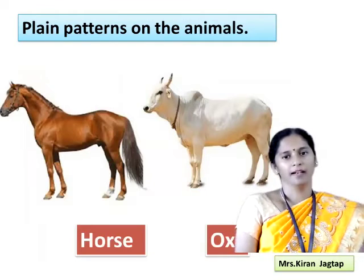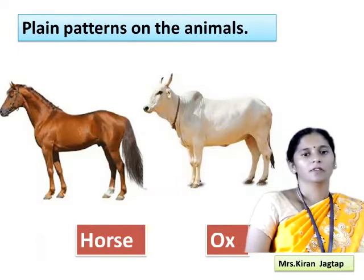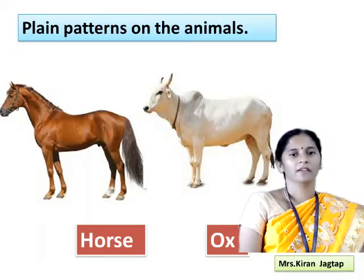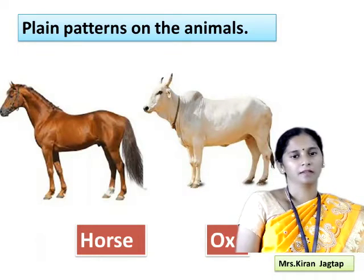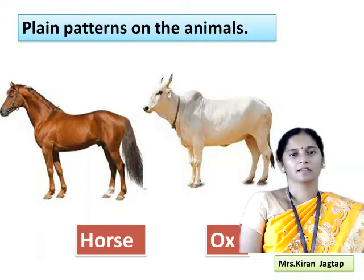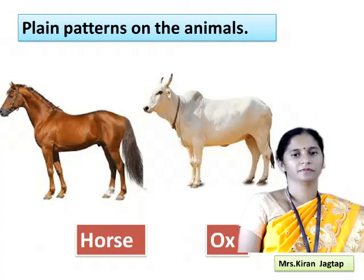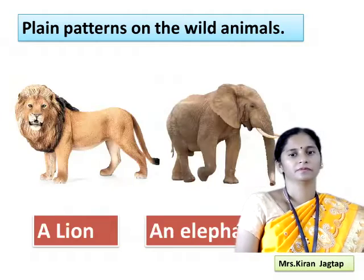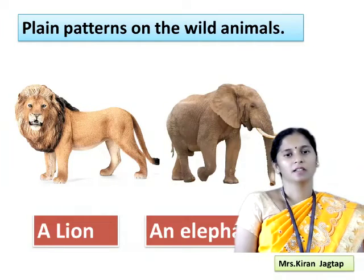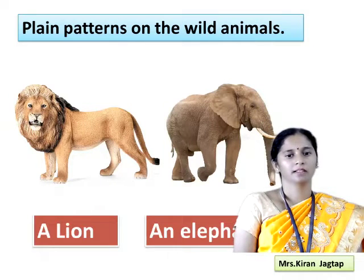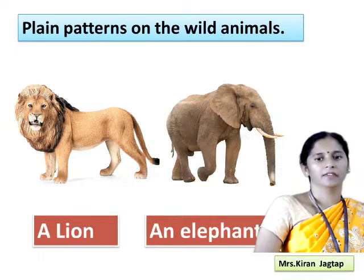Plane patterns on the animals we can also see here. The first picture is of a horse having the plane pattern, means single color pattern. We can see that is the brown color, and ox. Like wild animals also, we can see the plane patterns on their bodies — a lion and an elephant.